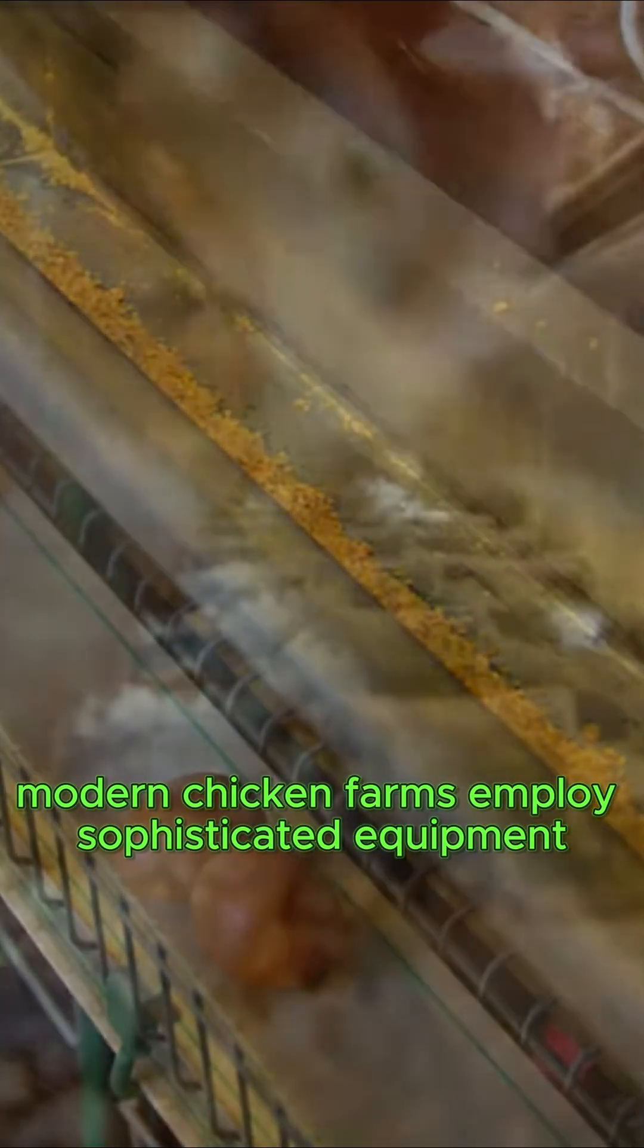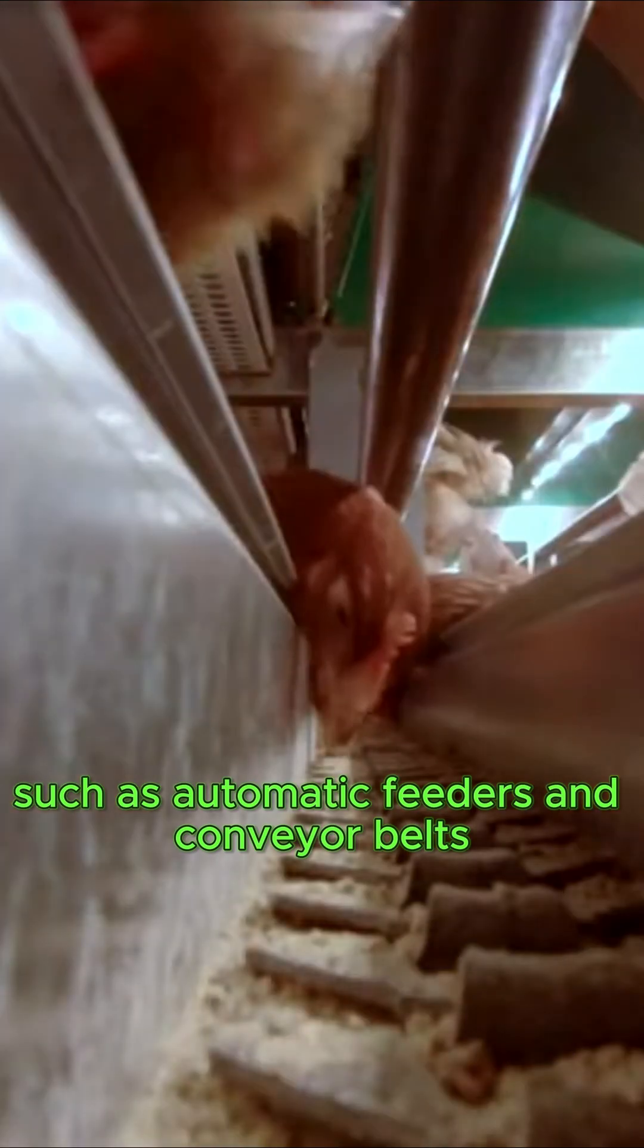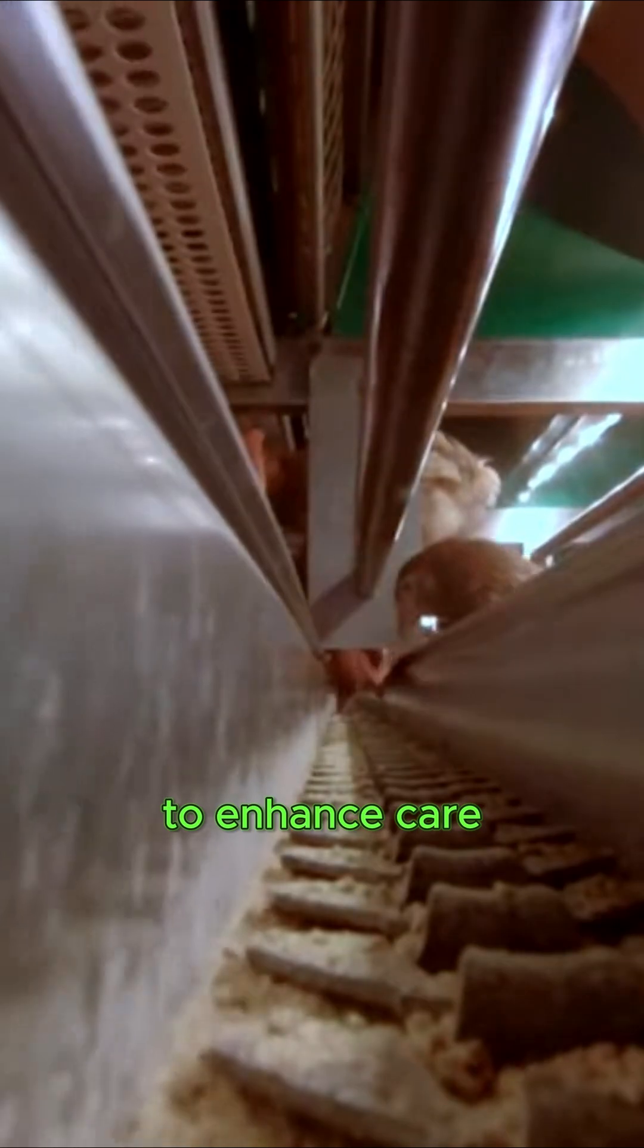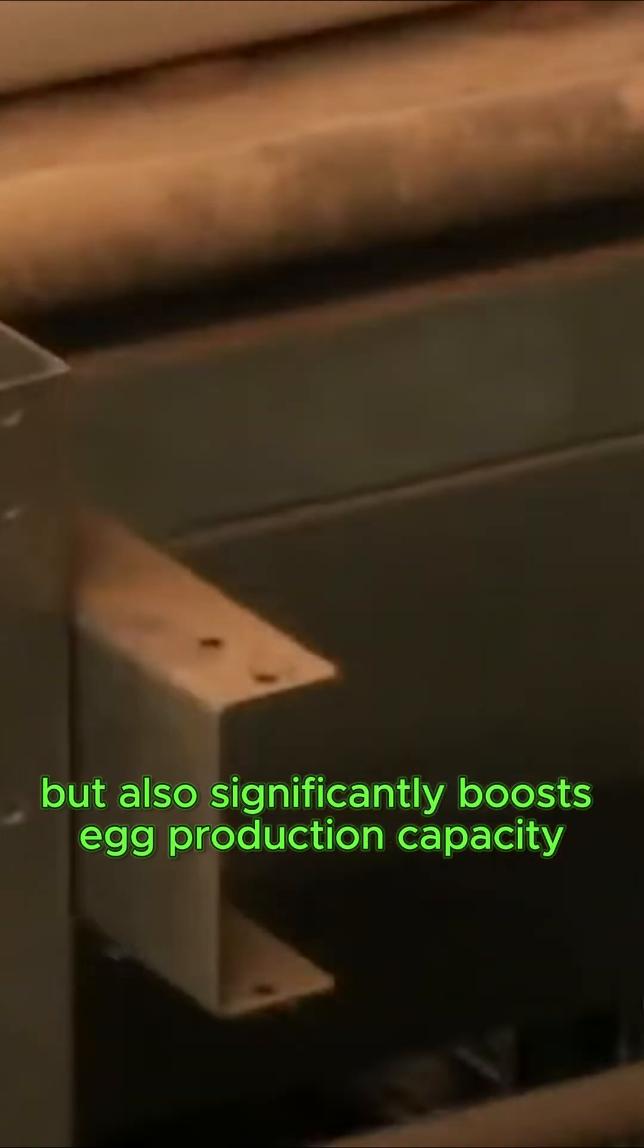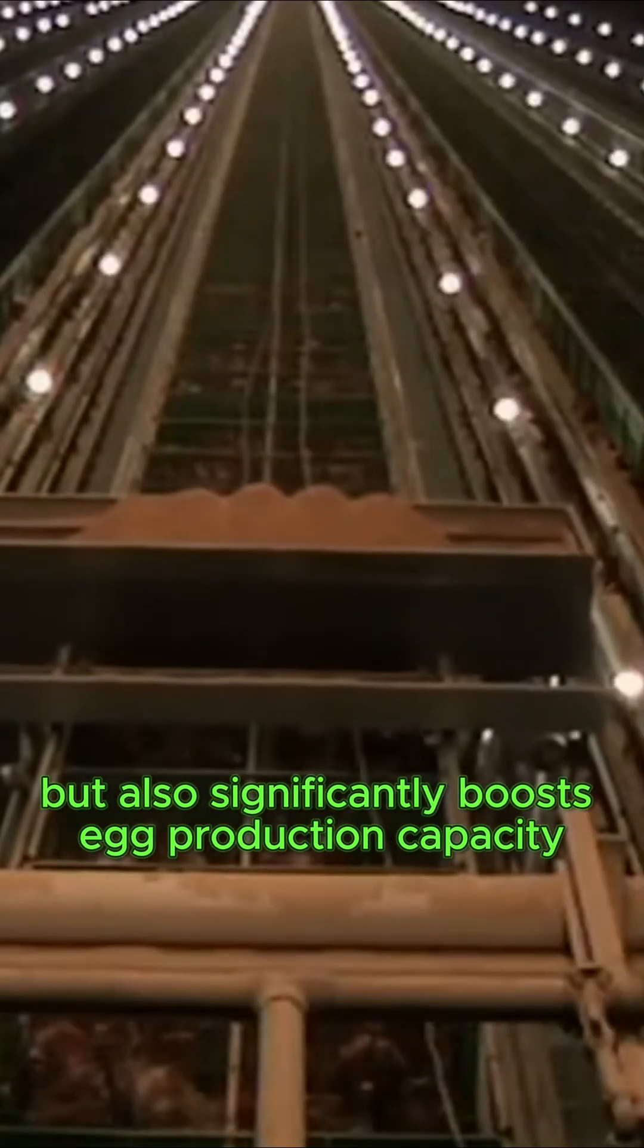Modern chicken farms employ sophisticated equipment, such as automatic feeders and conveyor belts, to enhance care and maintain a hygienic environment for the chickens. This technological advancement not only streamlines operational efficiency but also significantly boosts egg production capacity.